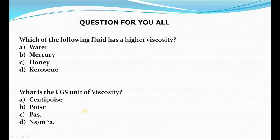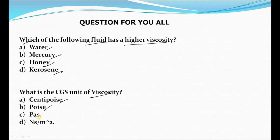Before I start my lecture, there is a question for you all. First question: which of the following fluids has a higher viscosity? The options are water, mercury, honey, and kerosene. The second question is: what is the CGS unit of viscosity? The options are centipoise, poise, pascal, and Newton second per meter.